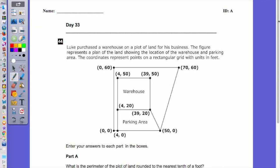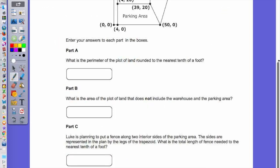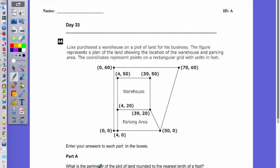44. Luke purchased a warehouse plot of land for his business. The figure represents the plot of land. What is the perimeter of the plot of land rounded to the nearest tenth of foot? So this is 60 units long, correct? This is 70 units long. This is 50 units long.